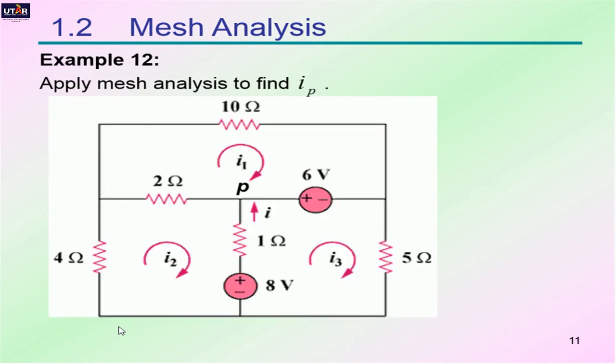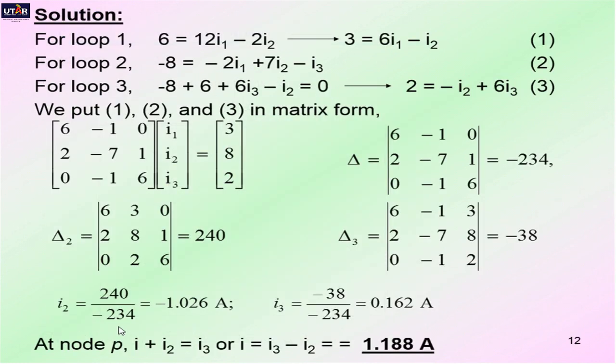Here are some examples you can try yourself. In this example, there are three meshes, so you should be able to obtain three sets of equations to describe them. By solving the three equations, you should be able to get the answer: the current I equals 1.188 ampere.